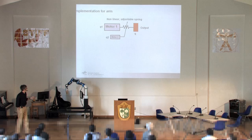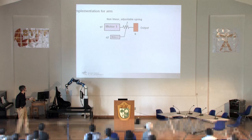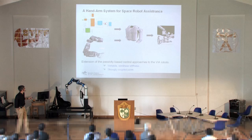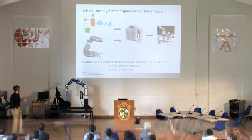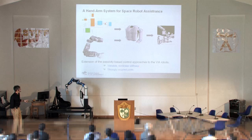For the arms, this is a development by Sebastian Wolf and Oliver Eiberger. We try to avoid using two motors, and instead use only one big motor and a second smaller motor to adjust the stiffness, in order to save weight and space. We are now improving the control and doing iterations of the system — it's like with our first generation lightweight robots, you need to change a lot of things until performance is really good. From a control point of view, we will extend the passivity-based control approaches to deal with variable nonlinear stiffness and strongly coupled joints.